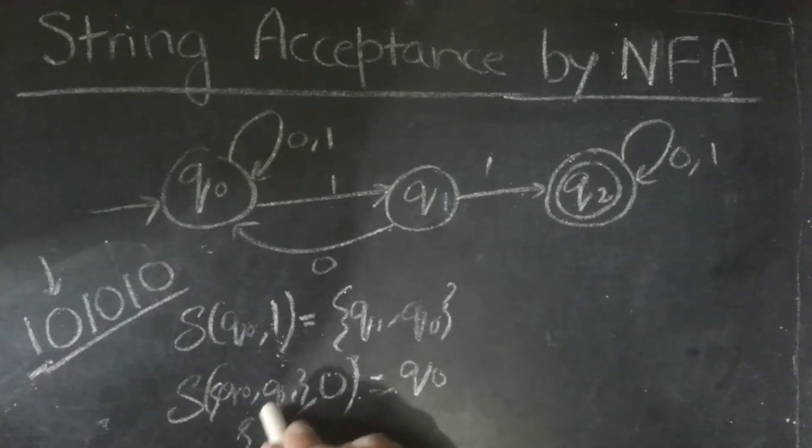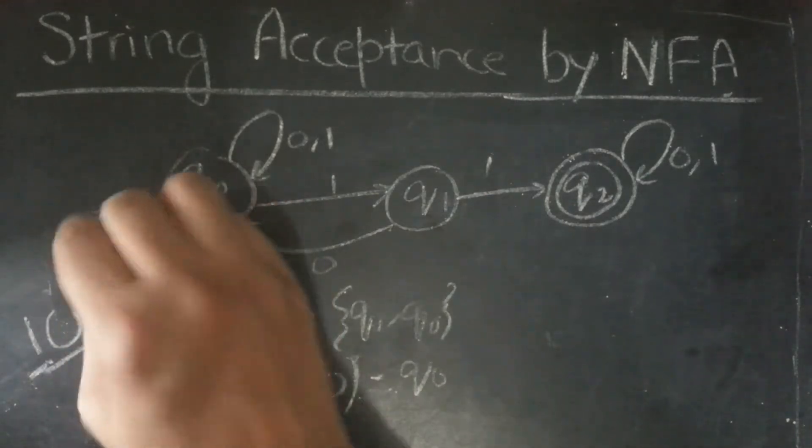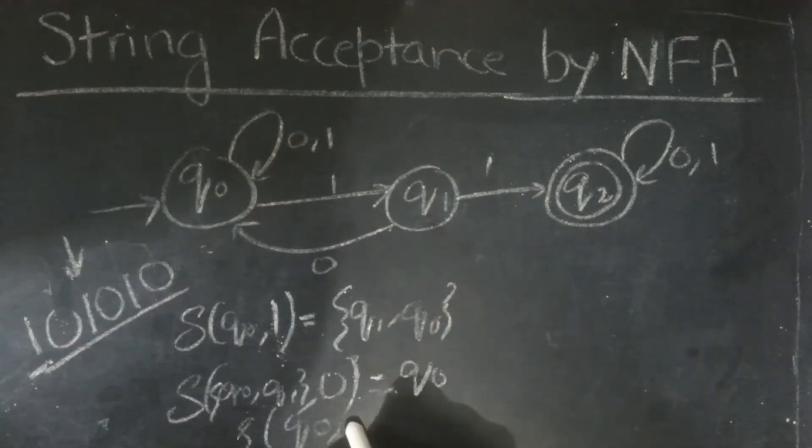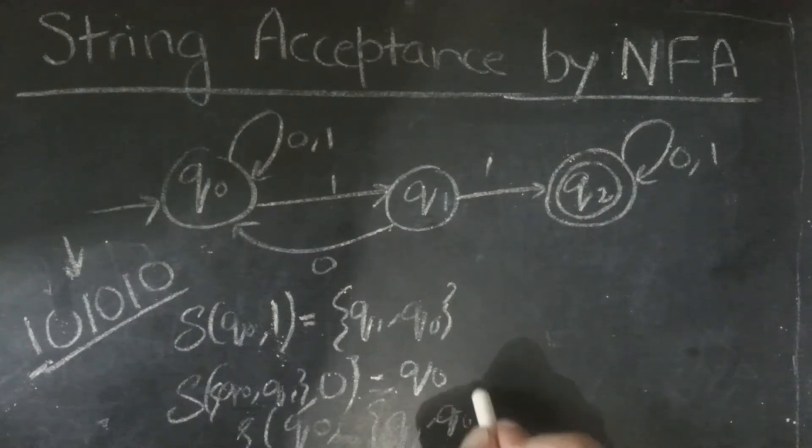Now, again, on q0, we have 1, which is same. So, we will get q1, q0.